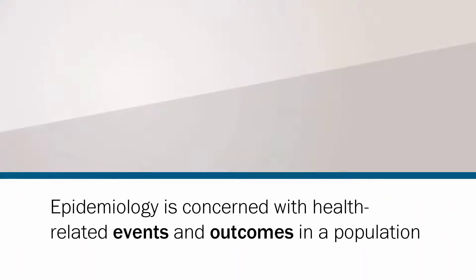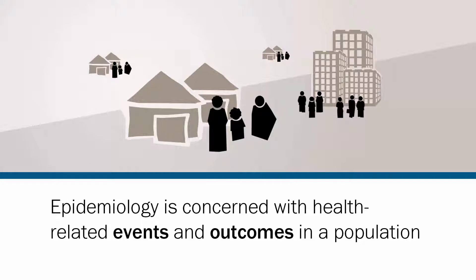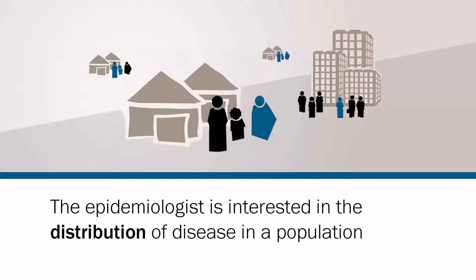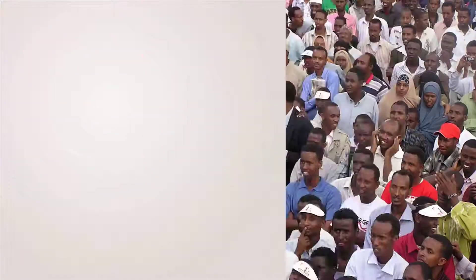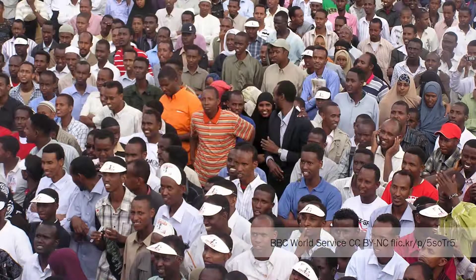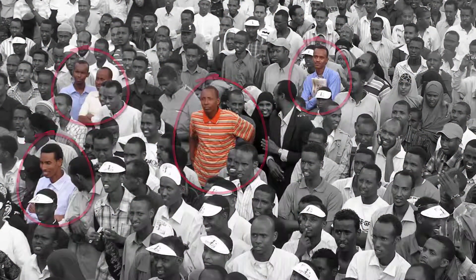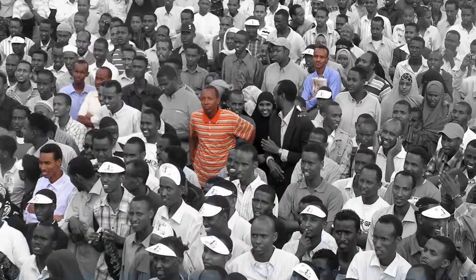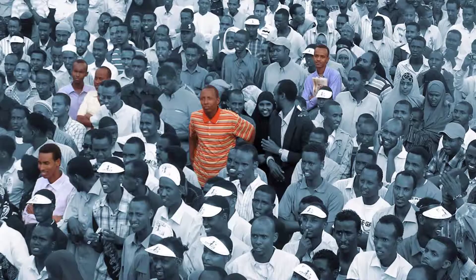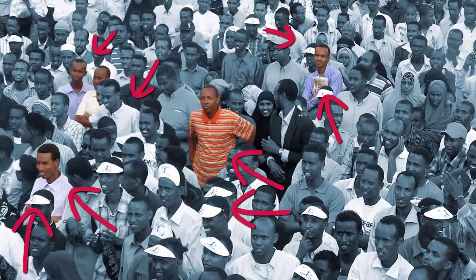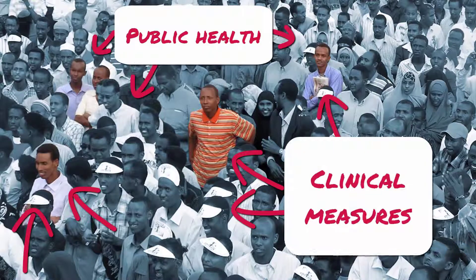Epidemiology is concerned with health-related events and outcomes that occur in a population. The epidemiologist is interested in the distribution of disease or other health conditions in a population. Epidemiological studies are concerned with the people who get a disease or health condition, with the people who do not get it, and with how these two groups differ. Understanding these determinants helps epidemiologists to address the situation through public health or clinical measures.